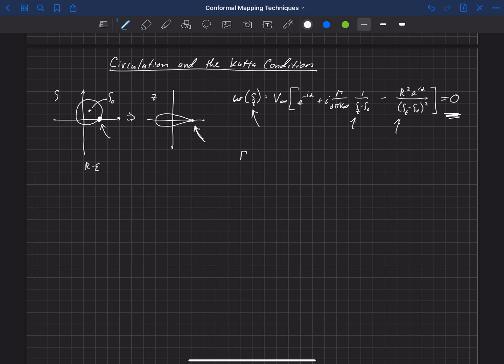Then we can just solve this equation and what we'll get is that gamma equals two pi v infinity over i times r squared e to the i alpha over zeta t minus zeta naught, minus zeta t minus zeta naught e to the minus i alpha.